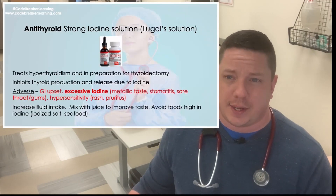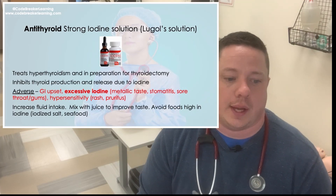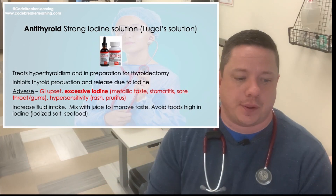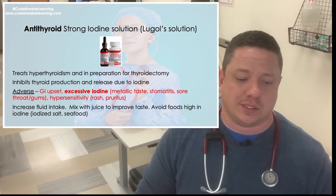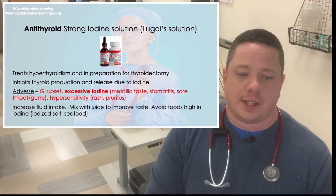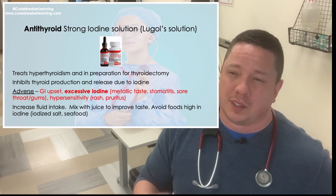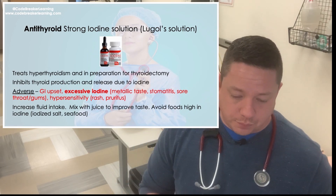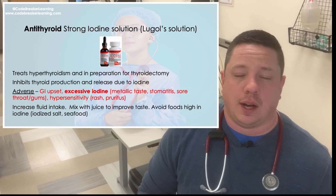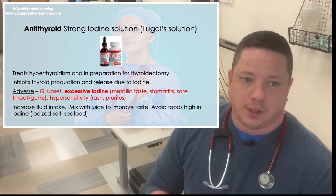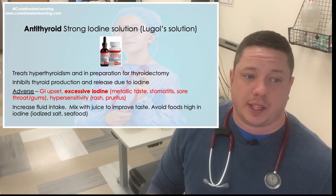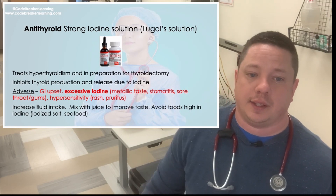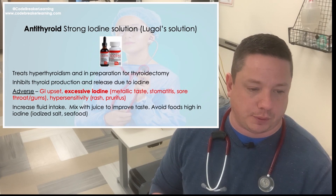The next antithyroid medication is strong iodine solution, also called Lugol's solution. Iodine stops the secretion of the thyroid — if giving iodine to treat hyperthyroidism, it suppresses thyroid hormone. Adverse effects include GI upset and excessive iodine, which can lead to a metallic taste and stomatitis — redness or canker sores in the mouth, similar to chemo side effects. It can also cause sore throat, sore gums, and hypersensitivity reactions such as pruritus (itching) or urticaria (hives or rash). Increase fluid intake and mix with juice to improve the taste. Avoid iodized salt and seafood.